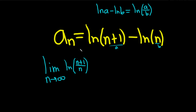Now it's a little more clear what the limit will be. This is n to the first power and this is n to the first power, so these are growing at the same rate. There's a 1 here and a 1 here, so this is really equal to the natural log of 1 over 1. You just divide the coefficients, which is the natural log of 1, which is 0.